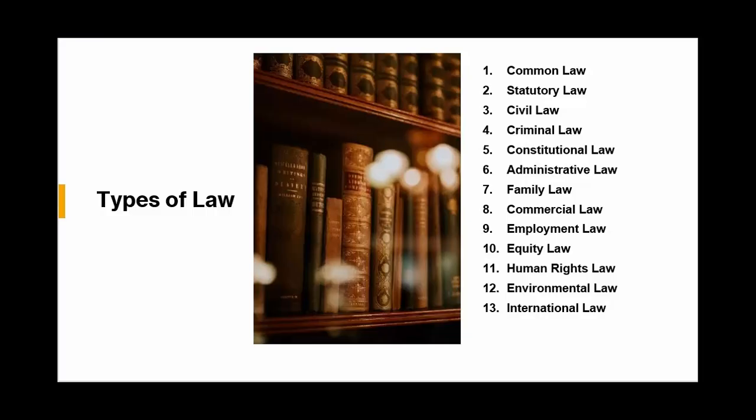Types of law in the UK as of 2024. Number one: Common law — based on judicial decisions, common law evolves through the rulings of judges in individual cases. It covers areas like contracts, torts, and property law. Number two: Statutory law — created by Parliament, statutory law consists of written laws or statutes. It includes legislation on criminal law, employment law, and environmental regulations.